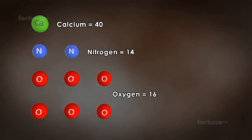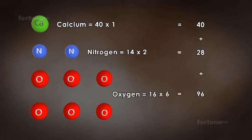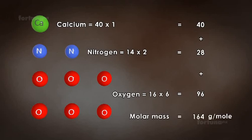So the sum of all the atoms in the molecule, 1 × 40 plus 2 × 14 plus 6 × 16, will work out to 164 grams per mole of calcium nitrate, which is its molar mass.